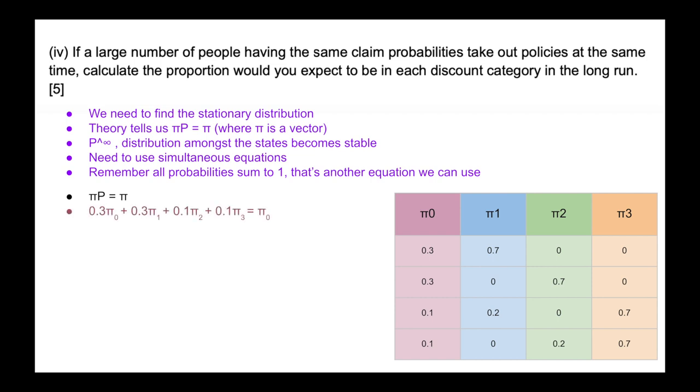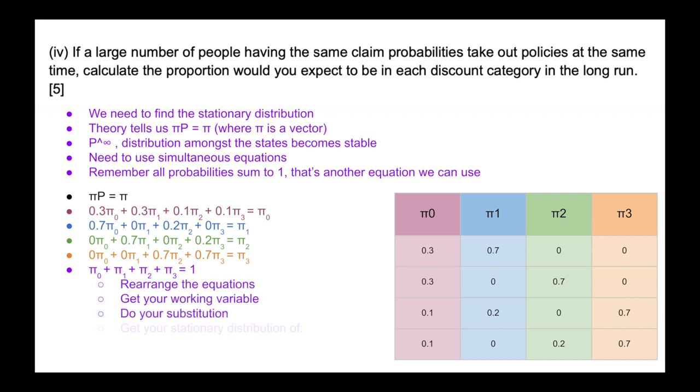So essentially, we have this vector times a matrix equaling a vector. And so we have our very first one at state, the 0% discount. And we're basically taking that 0.3, the 0 discount, 0.3, and the 20% discount, 0.1, and the 40%, 0.1, and the 60%. And we're essentially going to go through this on each of those columns. And you can see we now have our simultaneous equations plus the one where they all have to equal to one. Now what we do, this is mathematics, we rearrange the equations, we get a working variable, we do our substitutions, and then you can get your stationary distribution after doing a little bit of the hard work of getting 0.1639, 0.1556, 0.2042, and 0.4764. Now the reason I didn't show you all the maths is because I'm going to show you a much quicker way on how to do this on Excel.